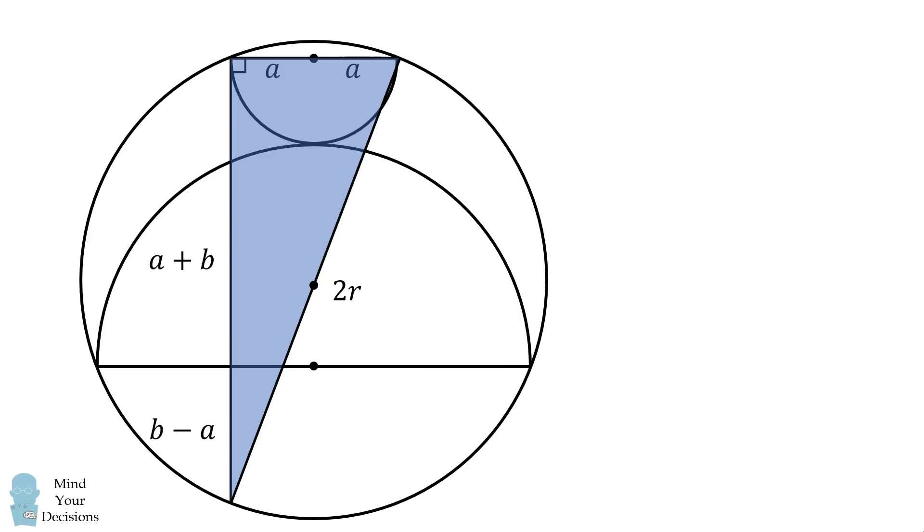We can then use my favorite right triangle theorem. We will have the square of 2a plus the square of 2b is equal to the square of 2r. We can square each of these terms and then simplify by dividing both sides by 4, to get a squared plus b squared is equal to r squared.